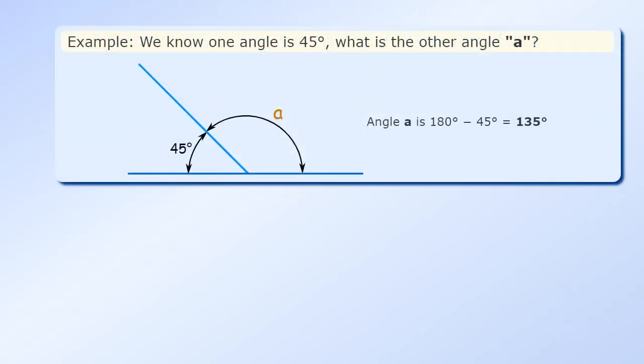When a line is split into two and we know one angle, we can always find the other. We know an angle is 45 degrees, what is the other angle? Angle A is 180 minus 45 equals 135 degrees.